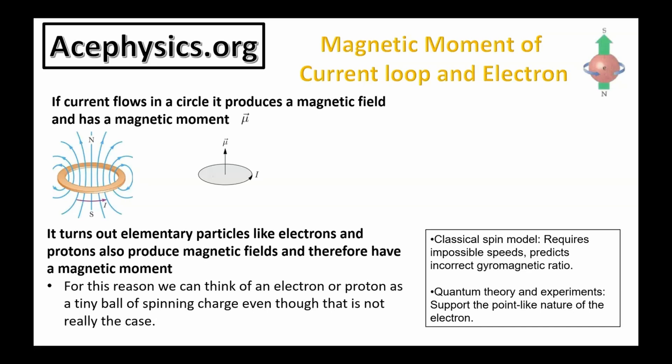Additionally, this model predicts an incorrect gyromagnetic ratio, which differs significantly from the experimentally observed value of 2. These discrepancies highlight the incompatibility of the classical spinning model with quantum theory. Quantum theory says the electron is a point-like entity with intrinsic spin.